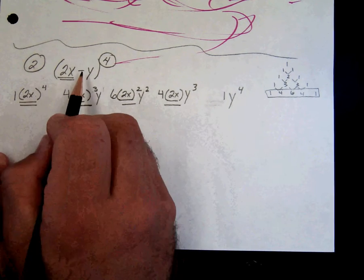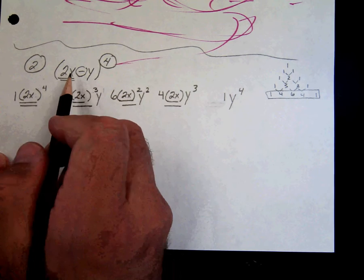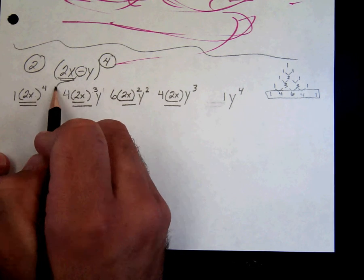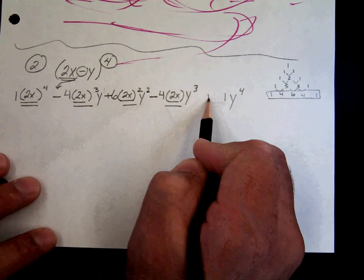We don't have a plus sign in the middle. And no matter what, if this is a minus, make this second term minus, then plus, then minus, then plus.